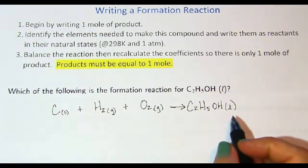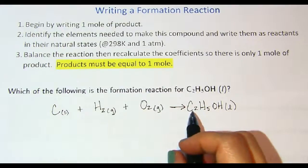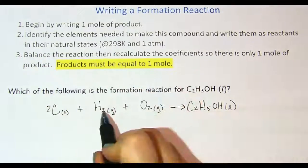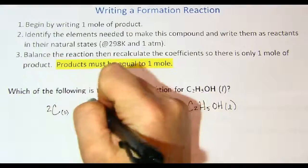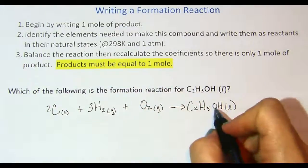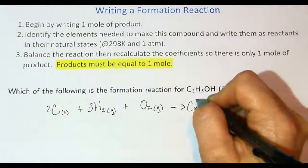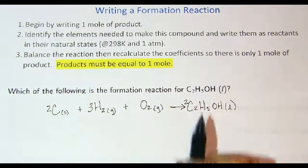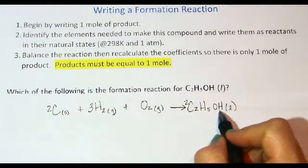Now we need to make sure the equation is balanced. We have one carbon on the left, two carbons on the right, so I'll place a 2 here. We have two hydrogens on the left, but six hydrogens on the right, so I'll place a 3 here. Three times two is six. We have one oxygen on the right but two on the left, so I'll place a 2 here.